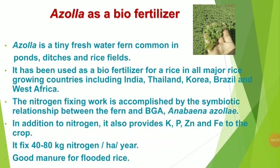Azolla as a biofertilizer: Azolla is a tiny freshwater fern common in ponds, ditches, and rice fields. It has been used as a biofertilizer for rice in all major rice-growing countries including India, Thailand, Korea, Brazil, and West Africa. The nitrogen-fixing work is accomplished by the symbiotic relationship between the fern and BGA Anabaena azollae. In addition to nitrogen, it also provides potassium, phosphorus, zinc, and iron to the crop. It fixes 40 to 80 kg of nitrogen per hectare per year and is good manure for flooded rice.